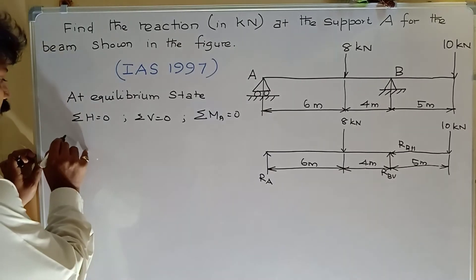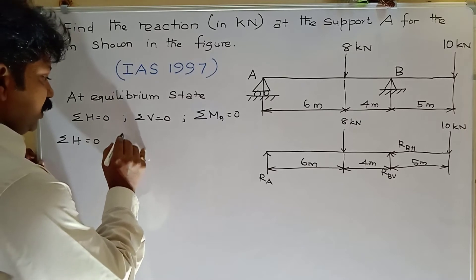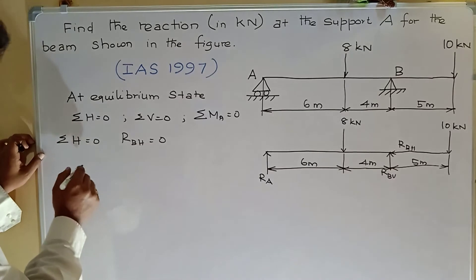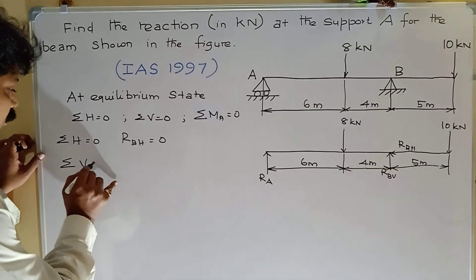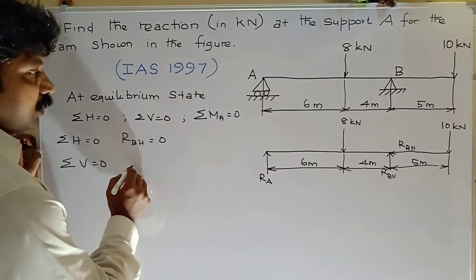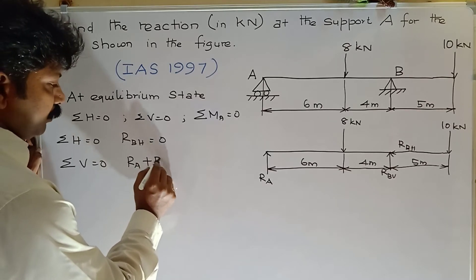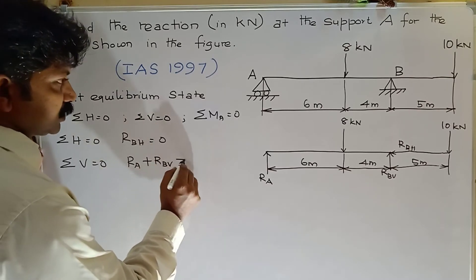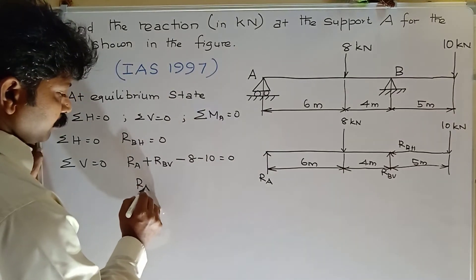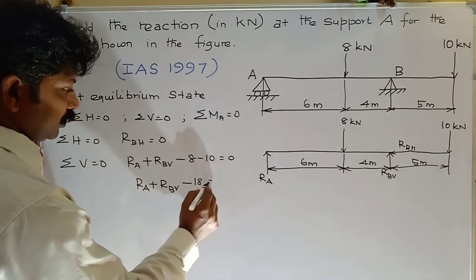Applying the first condition, sigma H equal to zero: horizontal force only RB_H, so RB_H equal to zero. For sigma V equal to zero, all the vertical forces: RA plus RB_V minus 8 minus 10 equal to zero, so RA plus RB_V minus 18 equal to zero.